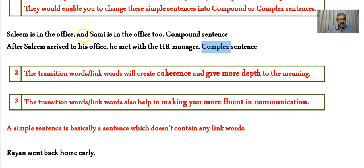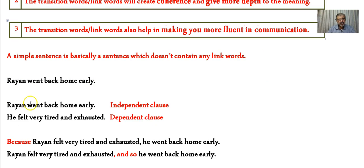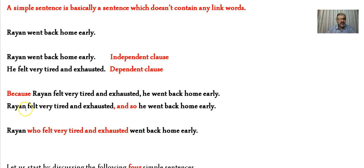Compound and complex sentences, by contrast, do contain link words. In the compound example the link word is 'and' — a conjunction — and in the complex example the link word is 'after' — a conjunctive. Both are link words and transitions.